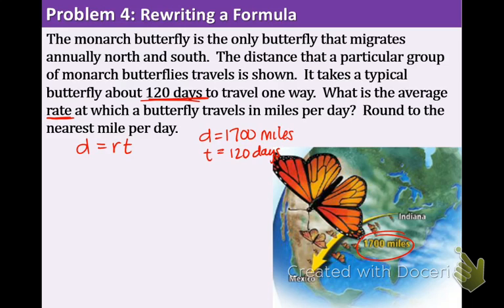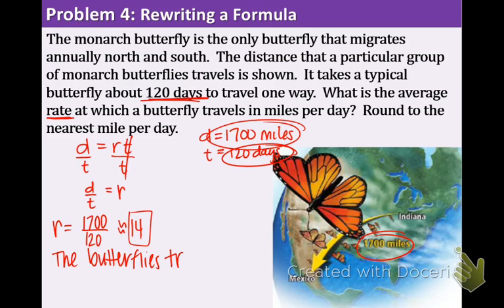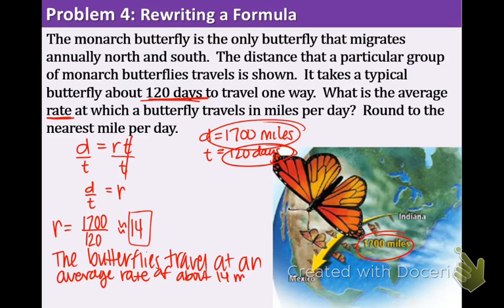Using d equals r times t, we need to get the rate r by itself. Dividing both sides by t, we get r equals d over t. Plugging in the values: r equals 1,700 divided by 120, which is approximately 14. The butterflies travel at an average rate of about 14 miles per day.